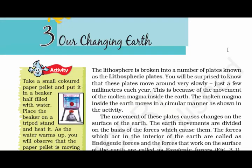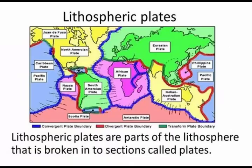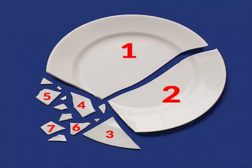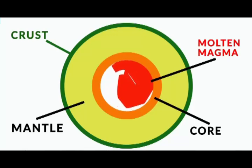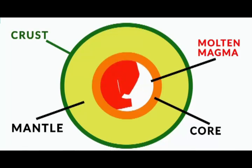In this chapter, we'll read how the surface of the earth is changing constantly. The uppermost layer of the earth, that is the lithosphere, has a number of plates known as lithospheric plates. The landmass on which both the continent as well as the ocean bed resides is called a lithospheric plate. These plates are broken into small sections, as you can see in the figure. These plates move around very slowly, just a few millimeters each year. It is because of the molten magma inside the earth, which moves in a circular manner. This causes the movement of the plates and hence the changes on the surface of the earth.